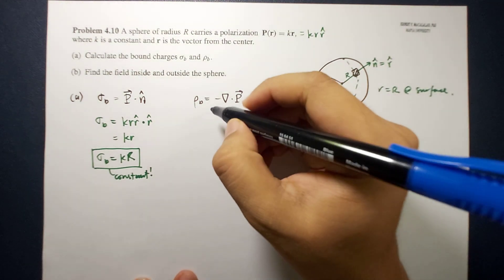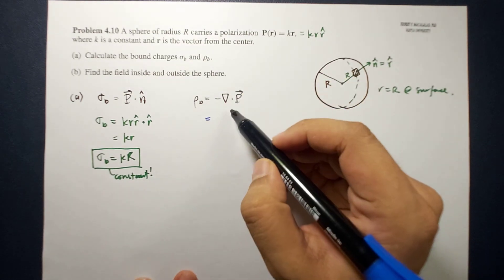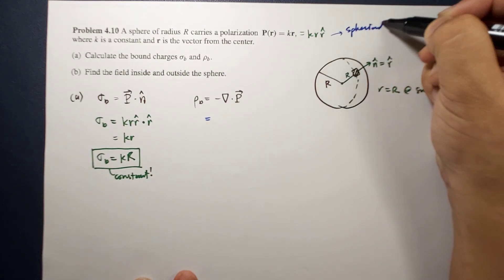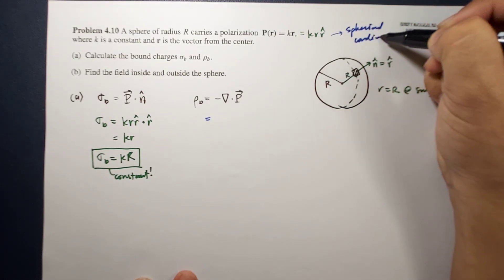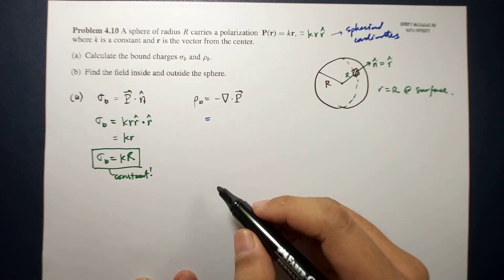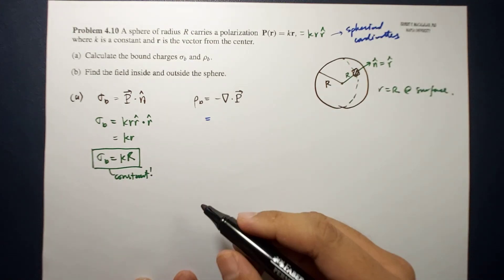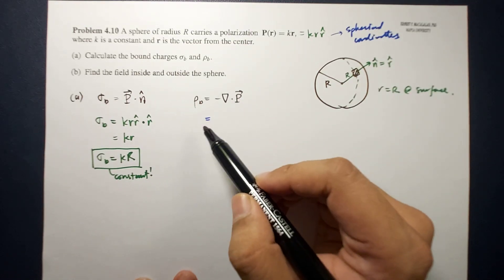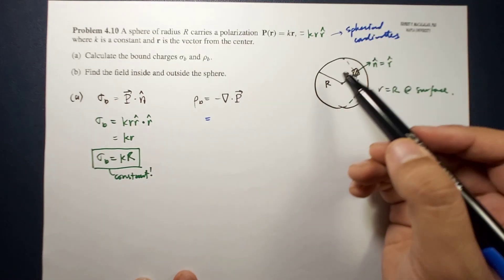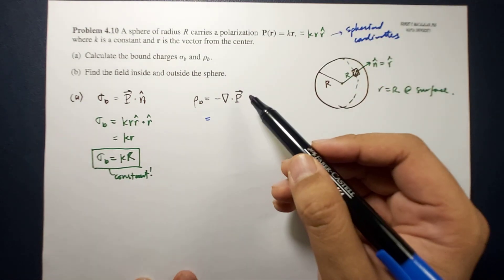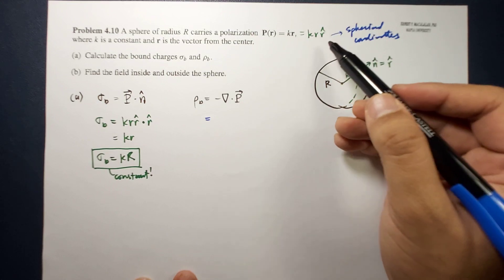The polarization is along R̂, so we can use spherical coordinates. In spherical coordinates, the divergence operator has three components: R̂, θ̂, and φ̂. Because the polarization is only along R̂, the operation along R is the one that will survive.